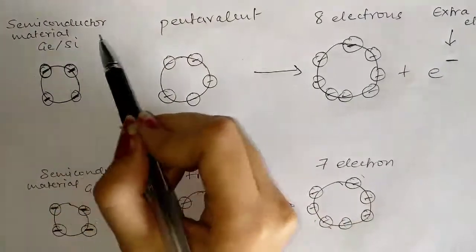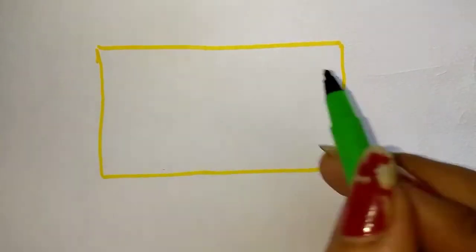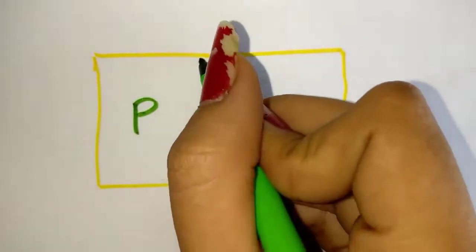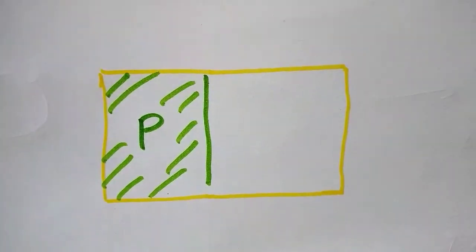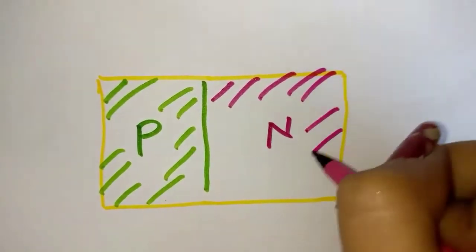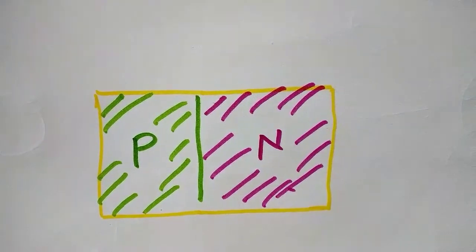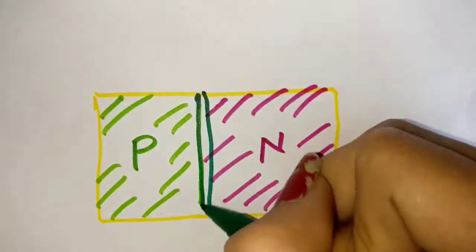The semiconductor materials normally used for making a diode are germanium or silicon. A diode is made by doping the semiconductor material with p-type impurities on one side and n-type impurities on the other, which creates a p-n junction in the middle portion of the diode.